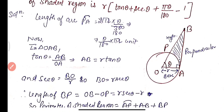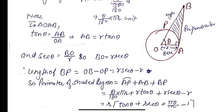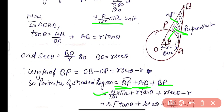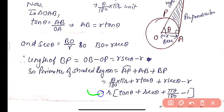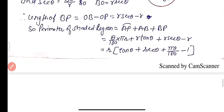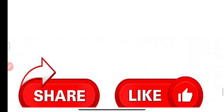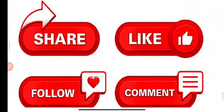Perimeter of shaded region = arc AP + AB + BP = (πrθ/180) + r·tan θ + (r·sec θ − r) = r(tan θ + sec θ + πθ/180 − 1). This is the required result. If you learned from this video, please subscribe to the channel and share it.